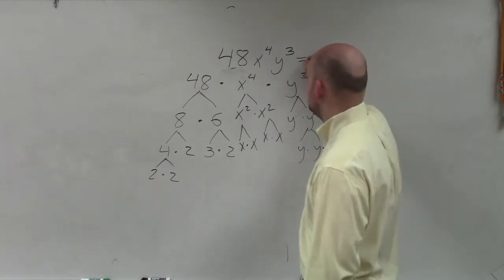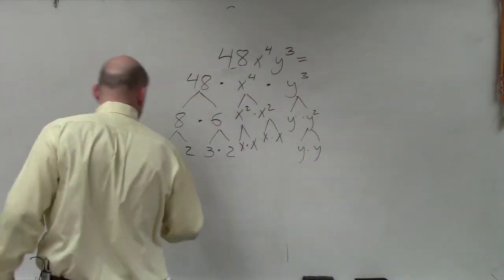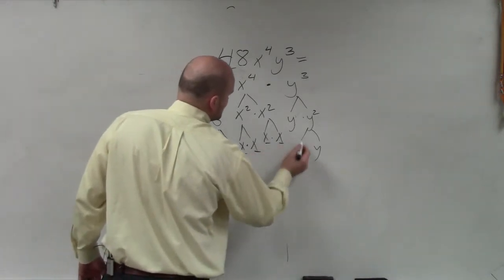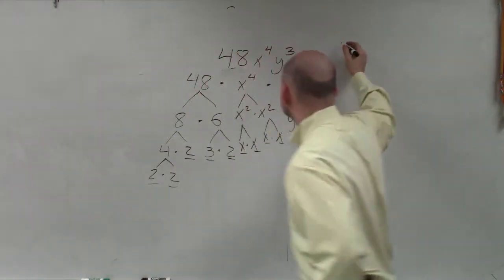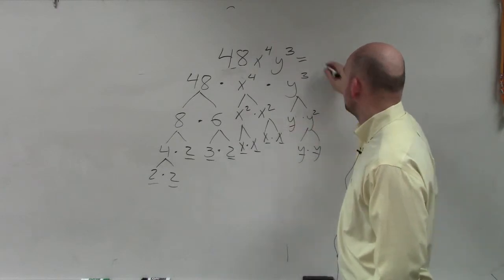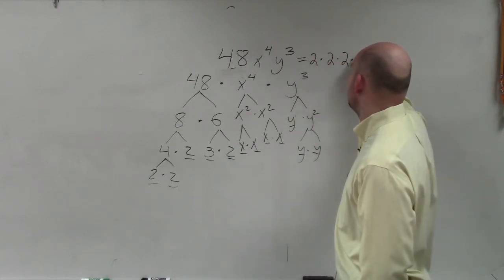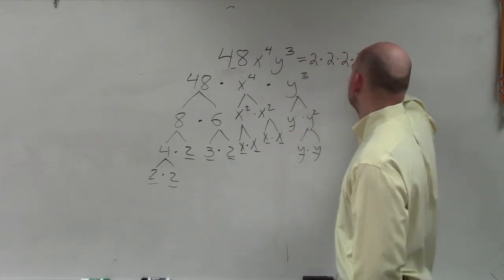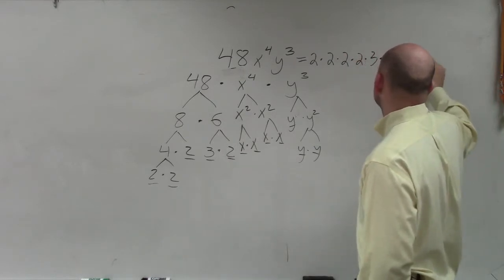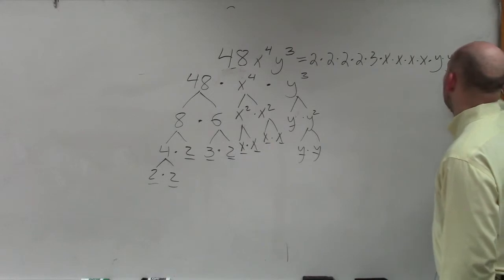Basically you're just going to take all of your prime factors — 2, 2, 2, 3, 2 — x, x, x, x — y, y — and write them out. So I have 2 times 2 times 2 times 2 times 2 times 3 times x times x times x times x times y times y times y.